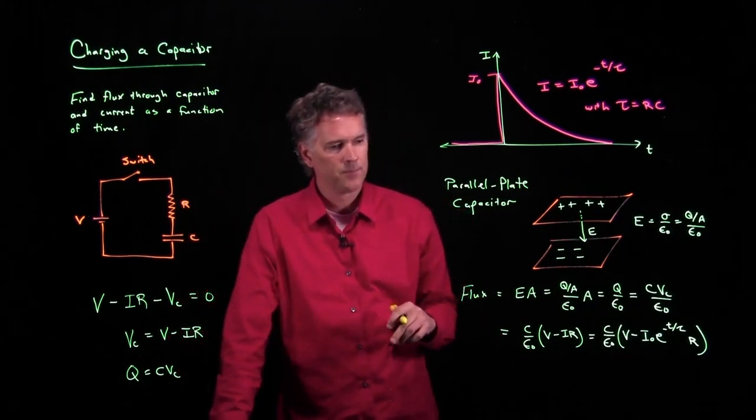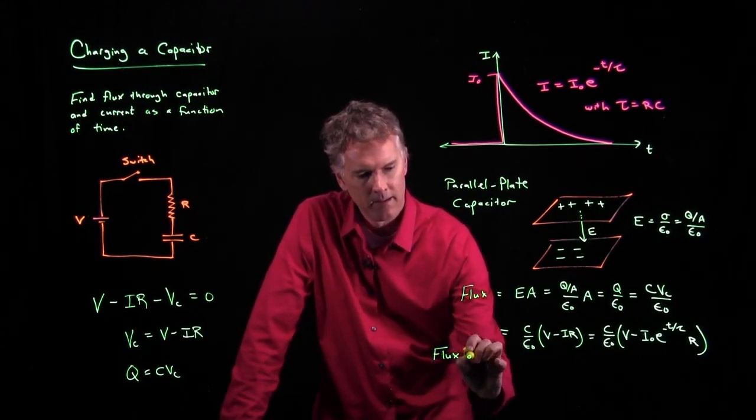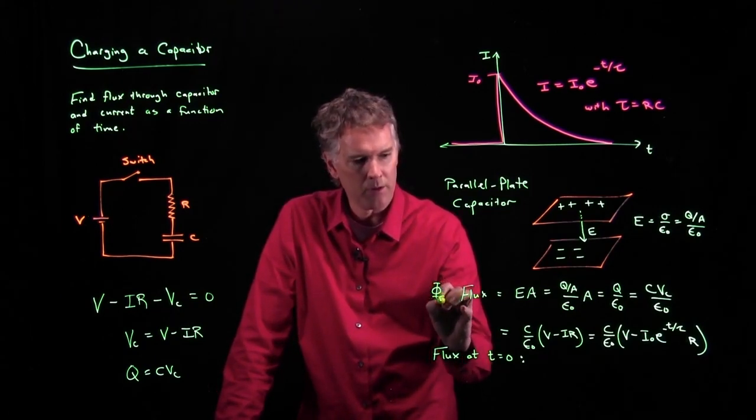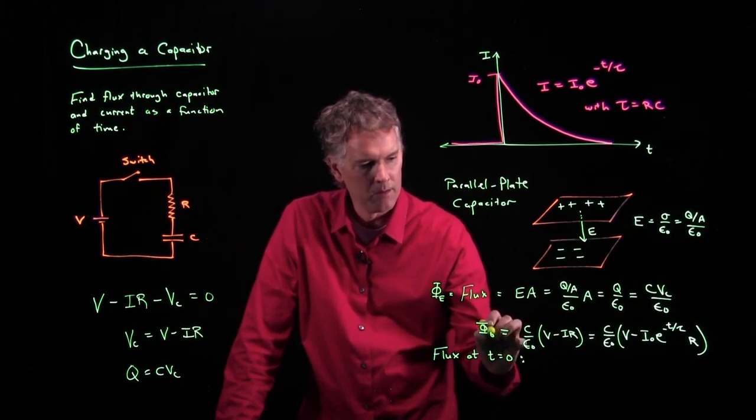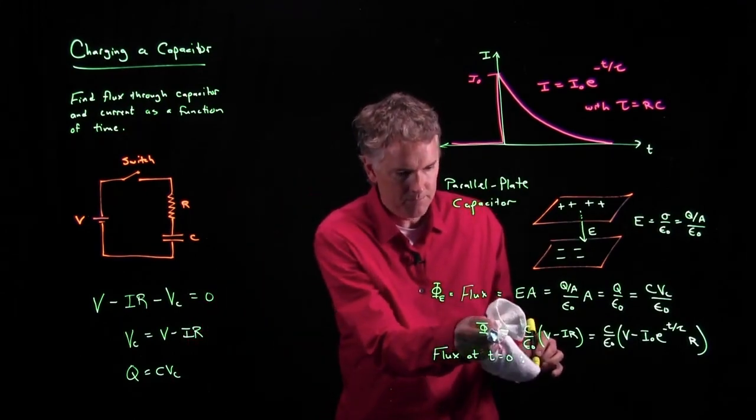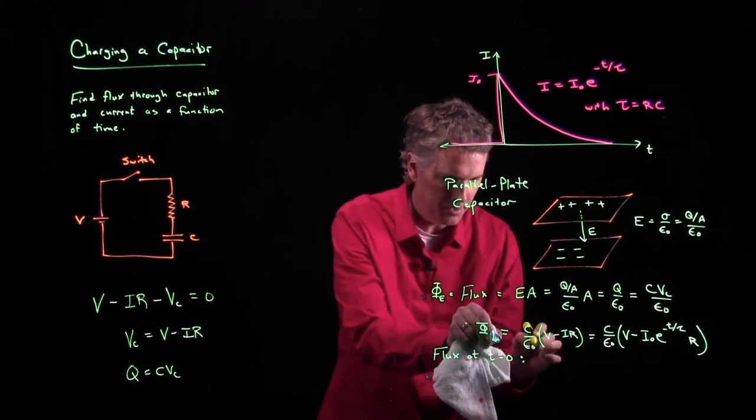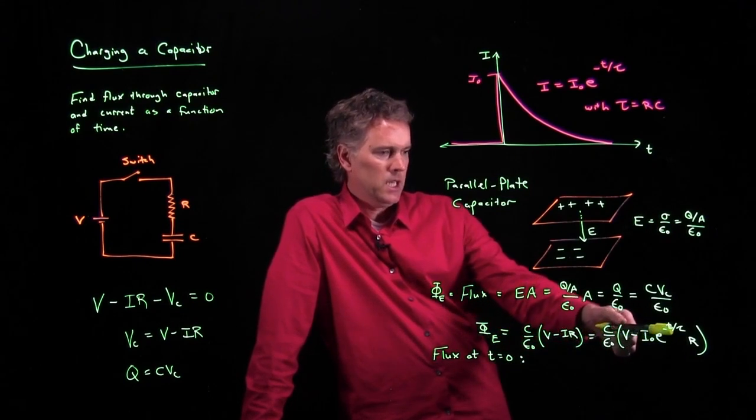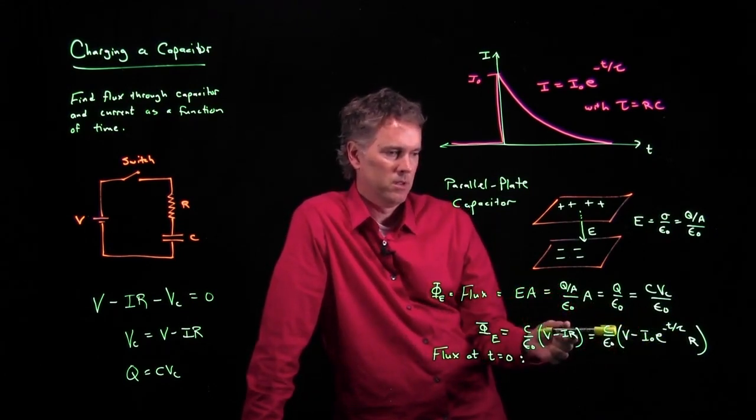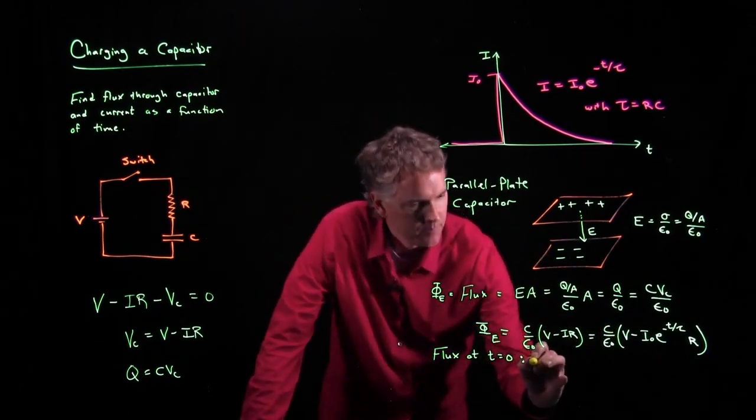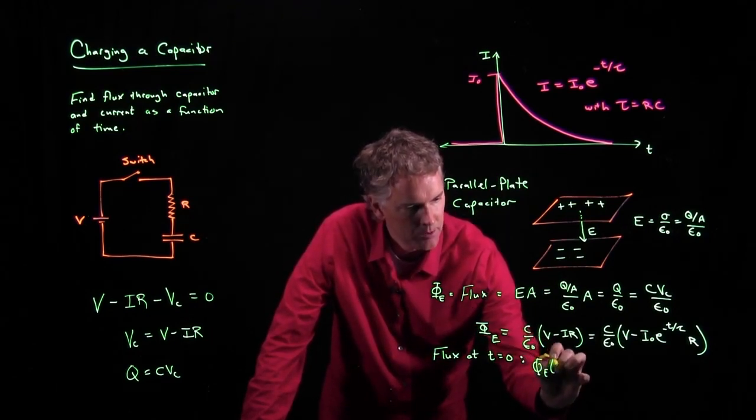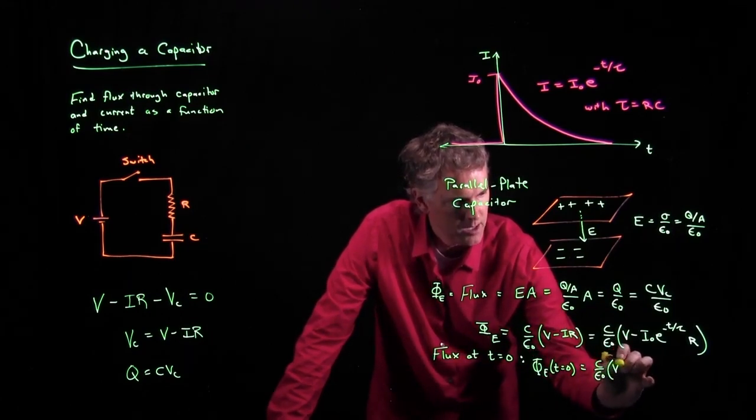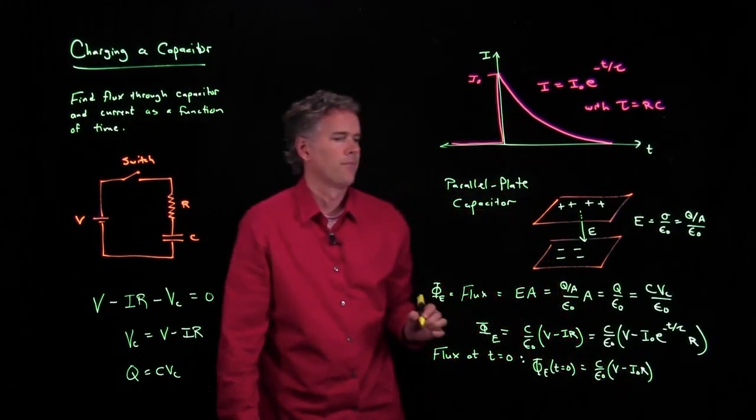Let's look at two extremes. What is the flux at T equals zero? And flux we usually write as a phi. We'll call it phi sub E for electric field. What is the electric field flux at T equals zero? Well, we just plug in T equals zero to this equation. And if I plug in T equals zero, what is E to the zero? It is one. And so I just get the flux at T equals zero is equal to C over epsilon naught times V minus I naught R.